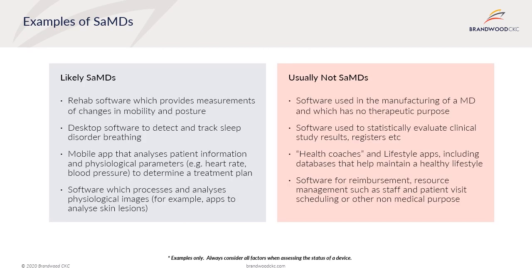Likely software as a medical device examples include rehab software which provides measurements of changes in mobility and posture, desktop software to detect and track sleep disorder breathing, a mobile app that analyzes patient information and physiological parameters such as heart rate and blood pressure to determine a treatment plan, and software which processes and analyzes physiological images, for example apps to analyze skin lesions. Unlikely examples include software used in the manufacture of medical devices with no therapeutic purpose, software used to statistically evaluate clinical study results, health coaches and lifestyle apps, and software for reimbursement or resource management such as staff and patient visit scheduling.